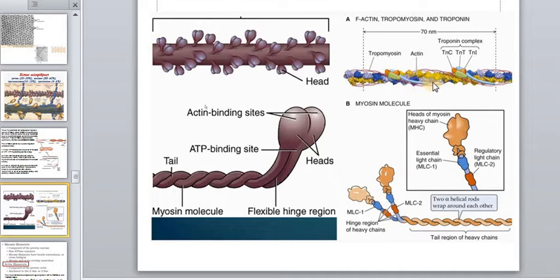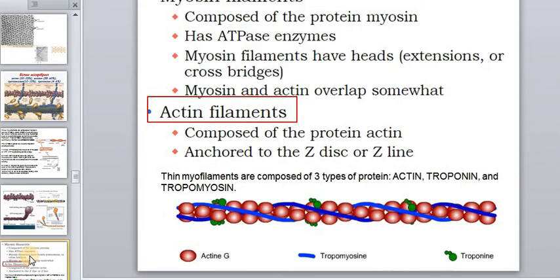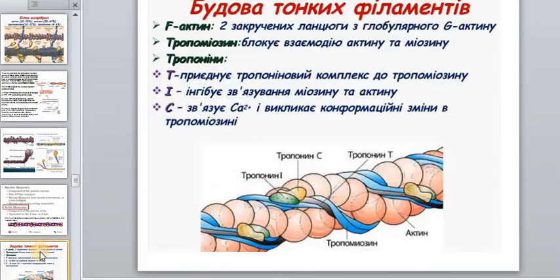Let's look at the thin myofilaments at high magnification. There are three types of proteins: globular actin (G-actin), tropomyosin, and troponin. Two filaments of globular actin create a filament of F-actin. Tropomyosin — shown in blue — blocks direct contact between actin and myosin.